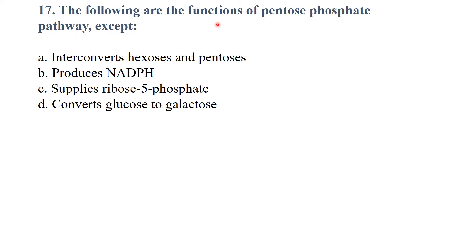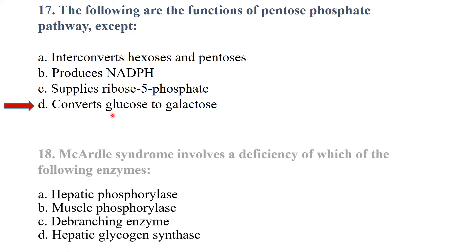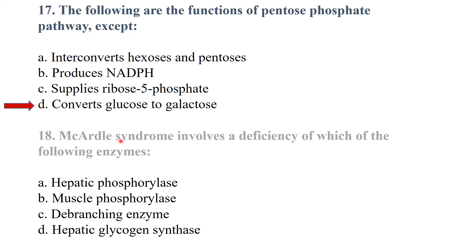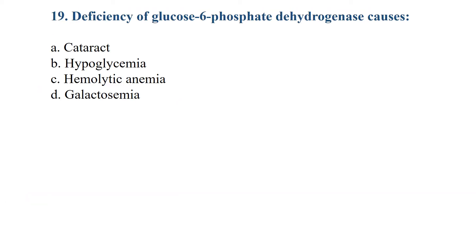The following are functions of the pentose phosphate pathway except — the answer is: it converts glucose to galactose. McArdle's syndrome involves deficiency of which enzyme? The answer is muscle phosphorylase. Deficiency of glucose-6-phosphate dehydrogenase causes hemolytic anemia.